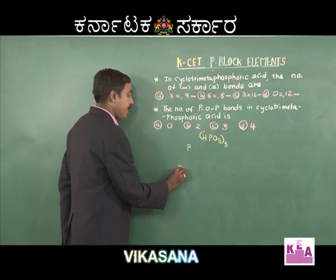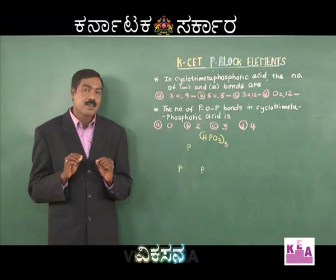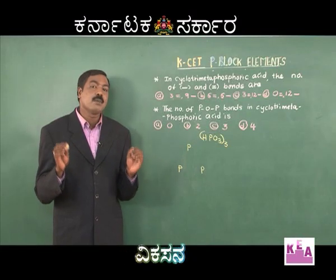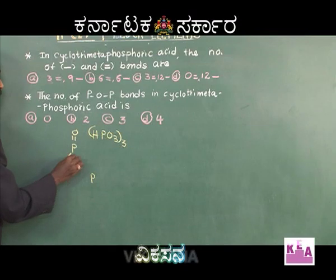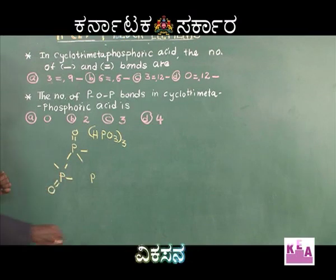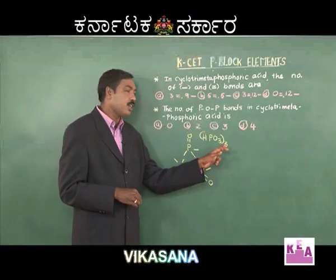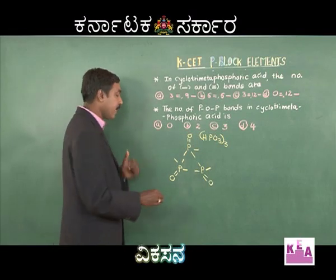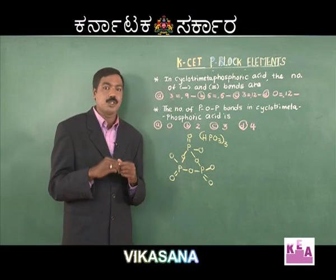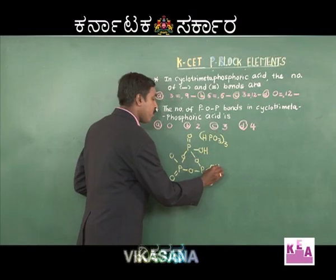Therefore I place P, P and one more P in a cyclic arrangement. Applying the codeword for each phosphorus: double bond O and umbrella — meaning phosphorus is surrounded by five bonds — giving one, two, three bonds per phosphorus atom. Doing this for all three phosphorus atoms. Total number of oxygen atoms is three times three, which is nine. I have already used up three, so the remaining six are distributed — one, two, three, four, five, six. The remaining three hydrogen atoms will form OH, OH and OH groups.